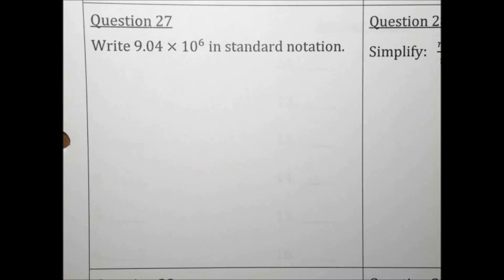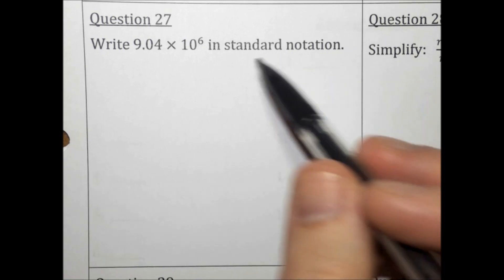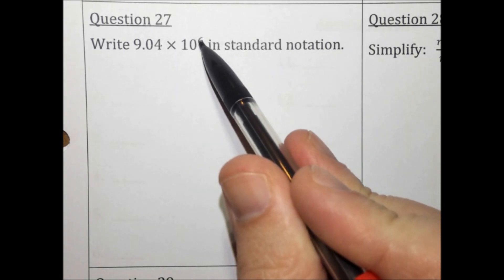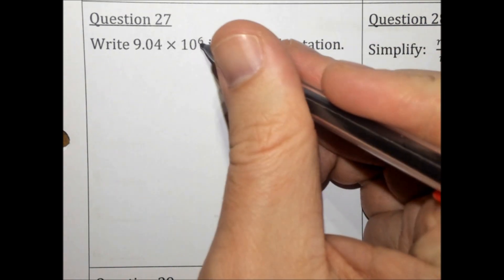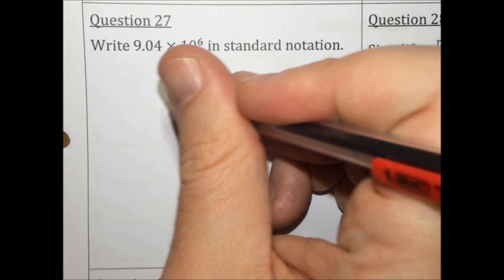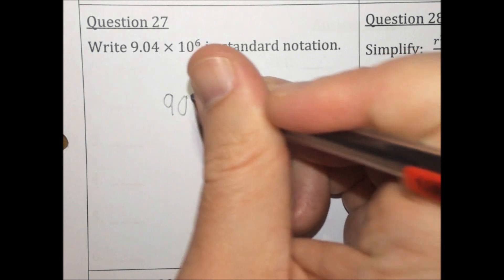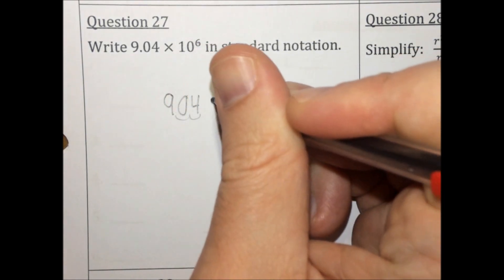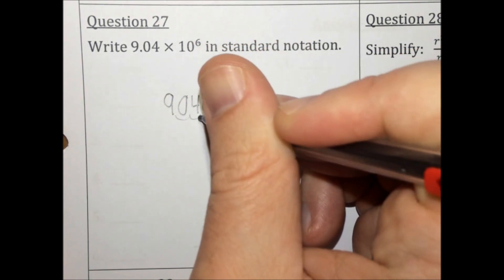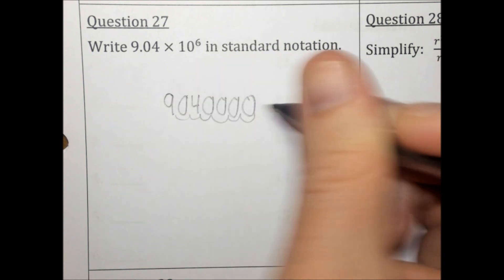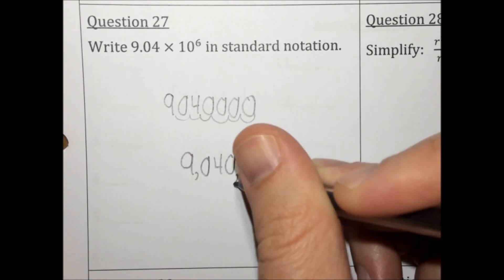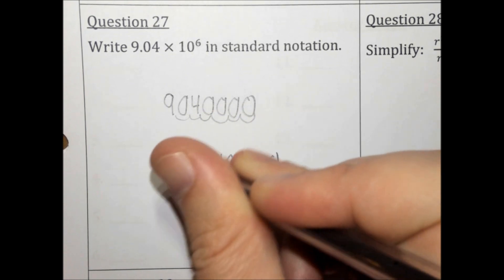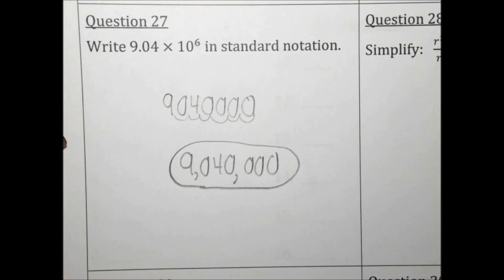Write 9.04 times 10 to the 6th in standard notation — that means just move the decimal six times. Because this exponent is a 6, our number is a big number. Moving 1, 2, 3, 4, 5, 6 places — we had to add some zeros because we didn't have room. When we add commas, the answer is 9,040,000.